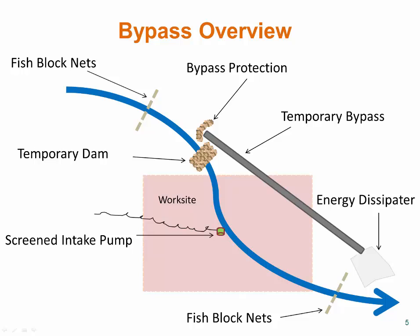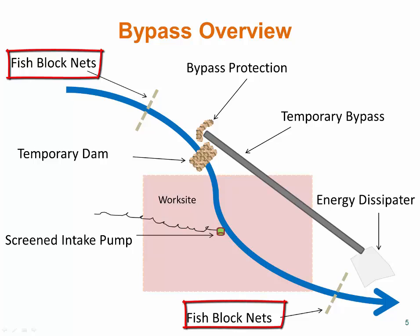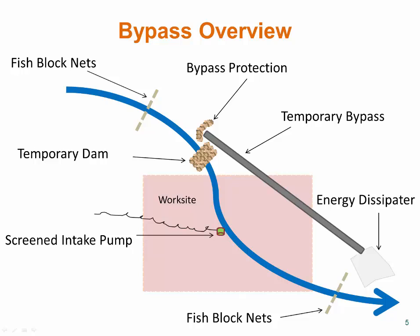This is a plan view example of the components included in a bypass. The work site is shaded pink and is the area that we are trying to dry up for construction purposes. In this example, stream water is being diverted around the work area in the gray colored line and dissipated immediately downstream. Block nets are installed upstream and downstream to prevent fish from entering the work site during construction.